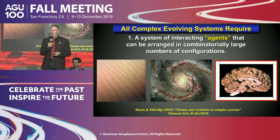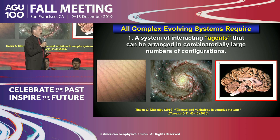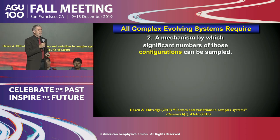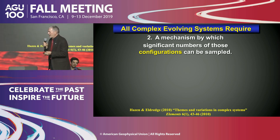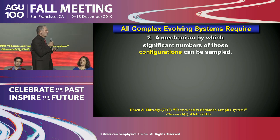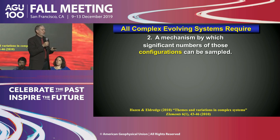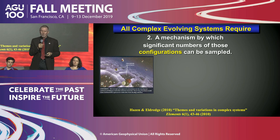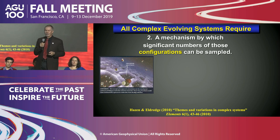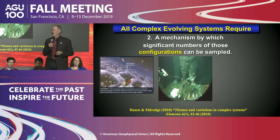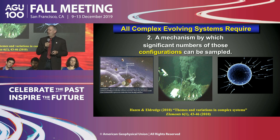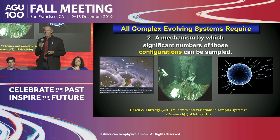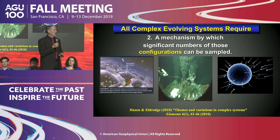Sand grains are a classic example: individual sand grains interact through contact forces, gravity, wind, and waves, producing the emergent property of ripples, dunes, braided streams, and deltas. At a larger scale, interacting stars in a galaxy produce spiral arms and the central bulge. Perhaps the most extreme case is the conscious brain, where billions of neurons interact to produce consciousness, though no single neuron is conscious. In origin of life, those agents are chemical — molecular.